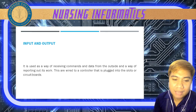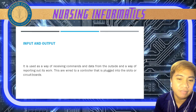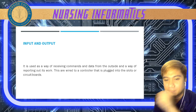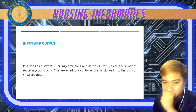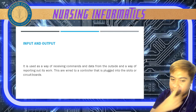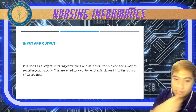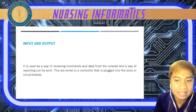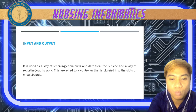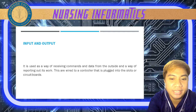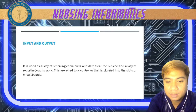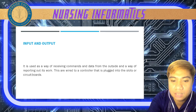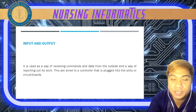Now let's have the different types of devices — we have your input and output devices. These devices are used as a way of receiving commands and data from the outside and reporting out their work. They are wired to a controller that is plugged into the slots of the circuit boards.